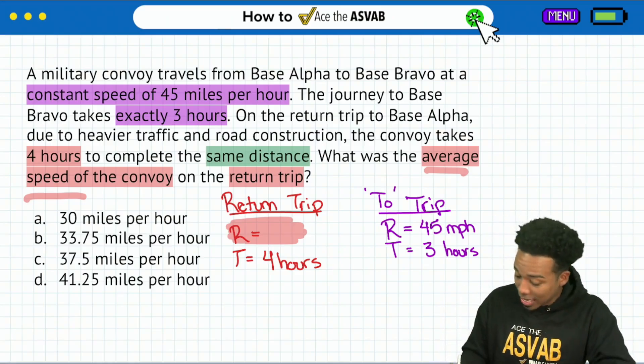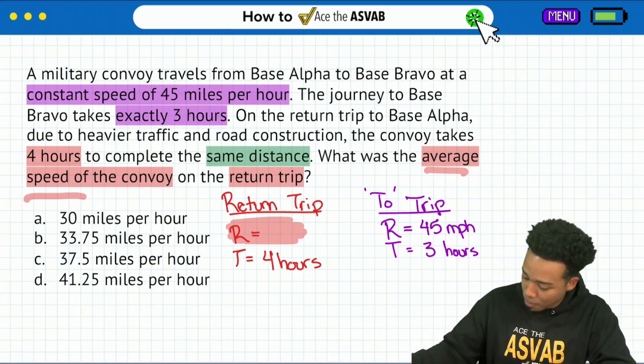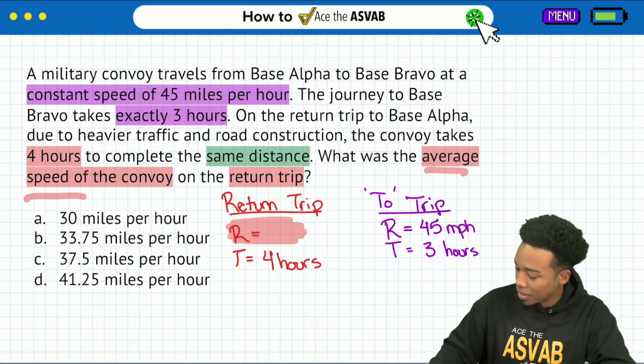One more time, because they said it's the same distance, that means the distance to base Bravo is the same distance as the return back to alpha. So I'm going to calculate the distance right over here for base Bravo, and then I'm going to turn it right back around.